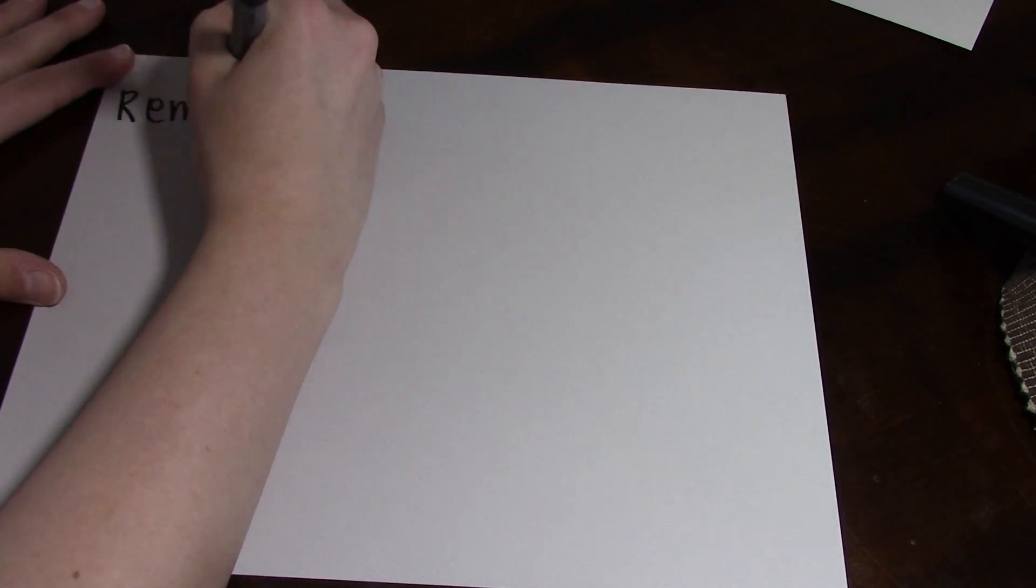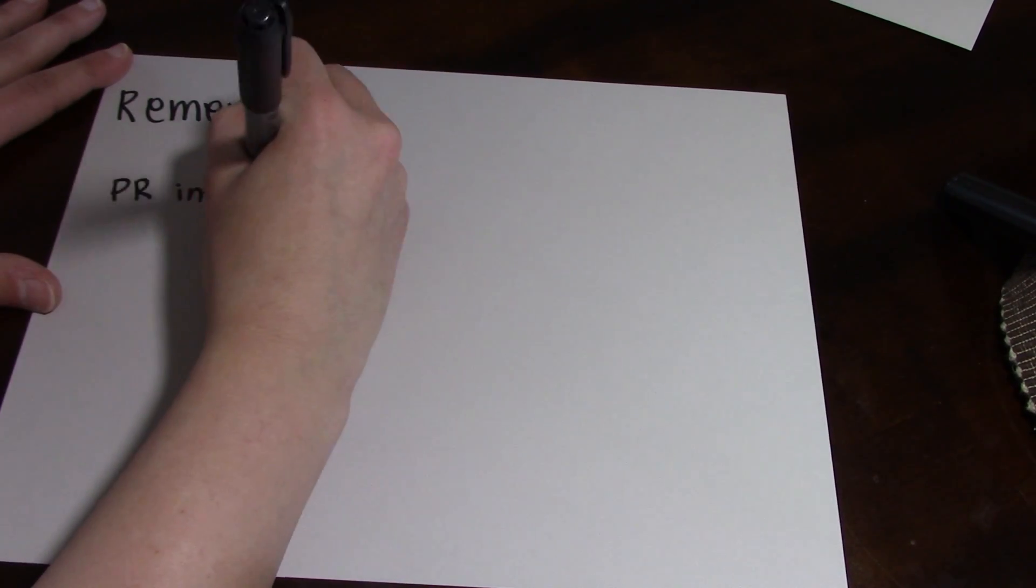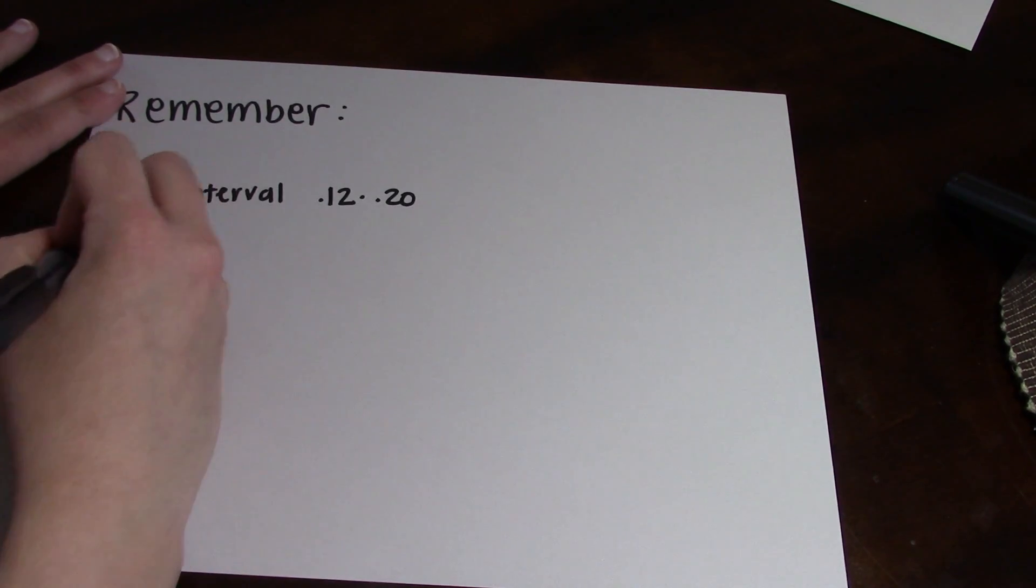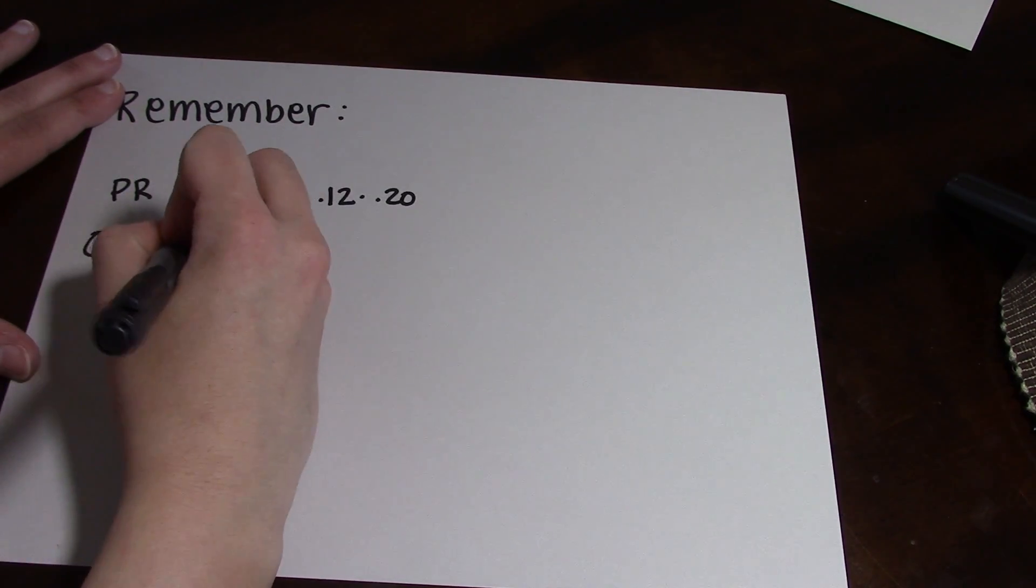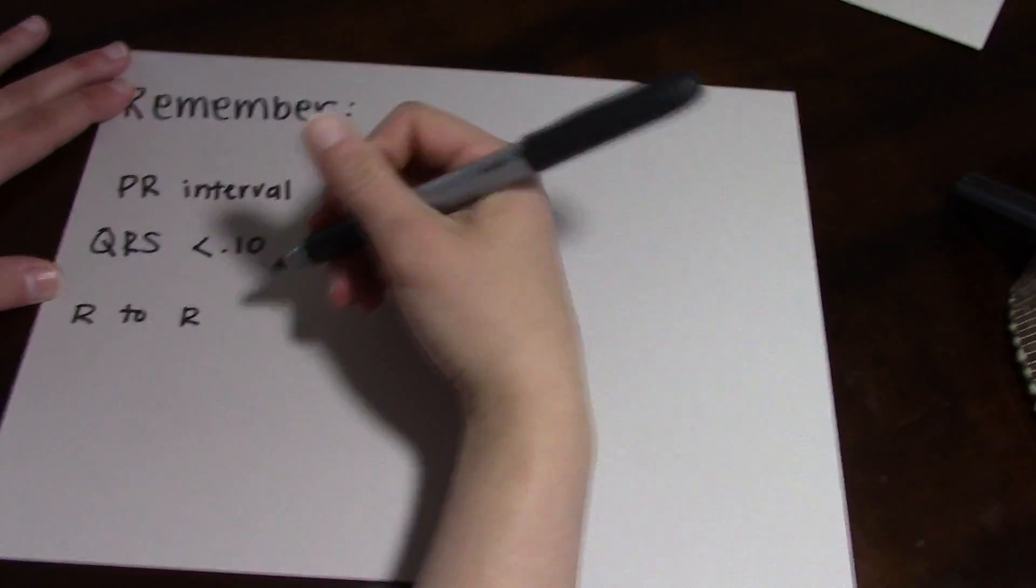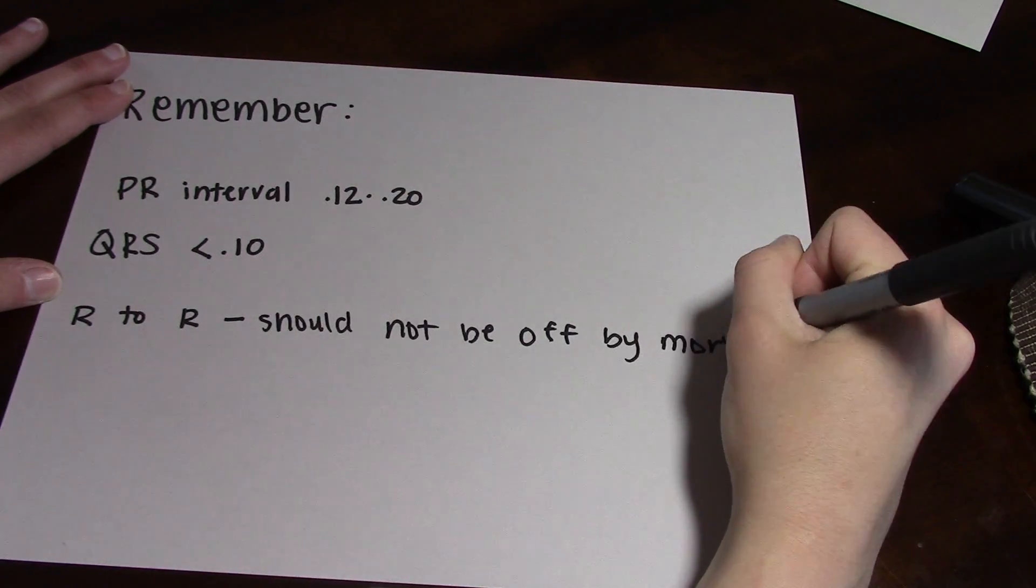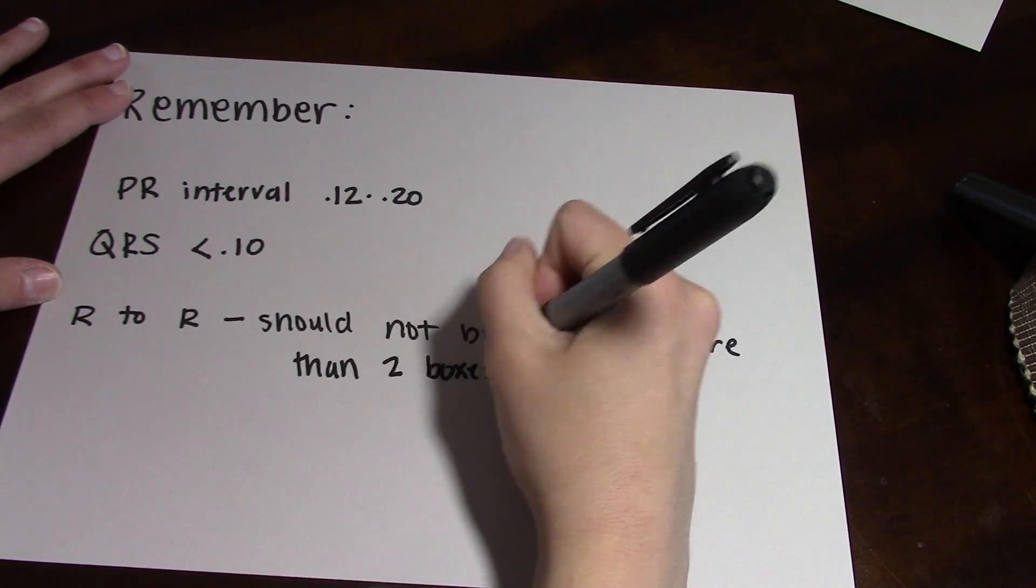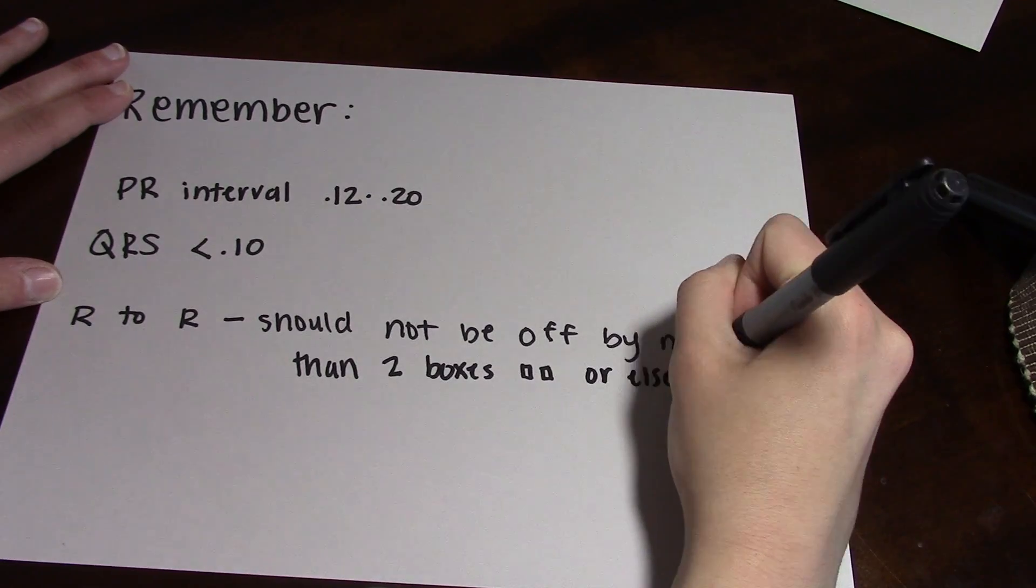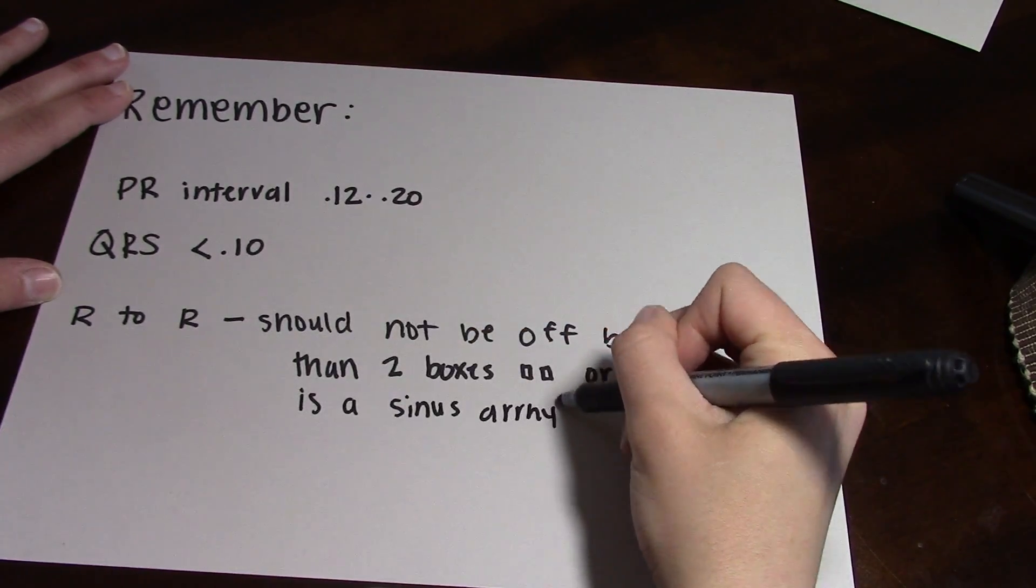So just as a little reminder from the basics EKG video, your PR interval should be 0.12 to 0.20 seconds, your QRS should be less than 0.10, and your R to R's should be even and not off by more than two boxes or else it'll be a sinus arrhythmia. This is very important for determining whether you have a sinus rhythm. You want to make sure that your PR interval is normal and your QRS is normal and you want to measure out those R to R's.